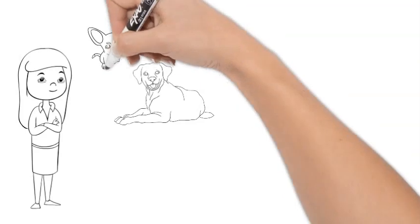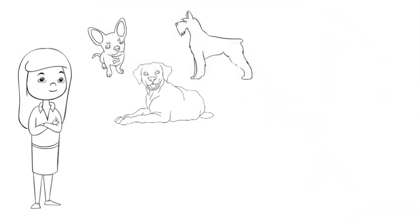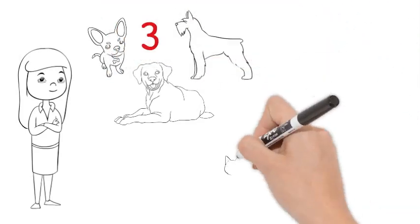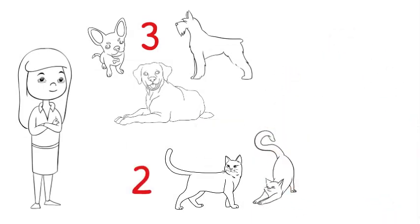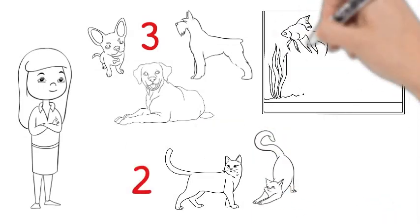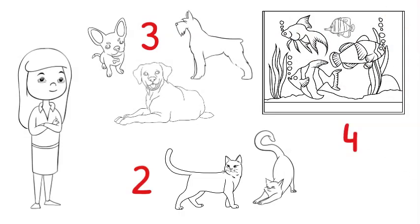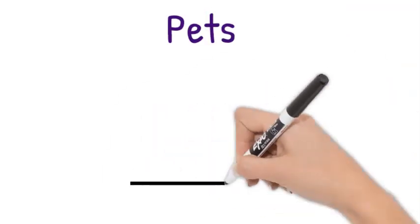One, two, three—three dogs. One, two—two cats, and four fish. How can we show this information on a graph? First we need a title. Let's call it Pets.